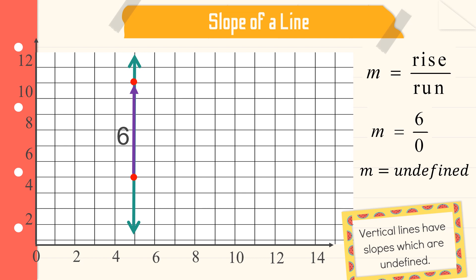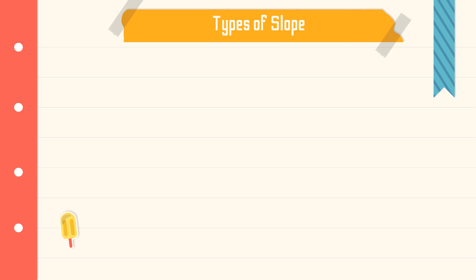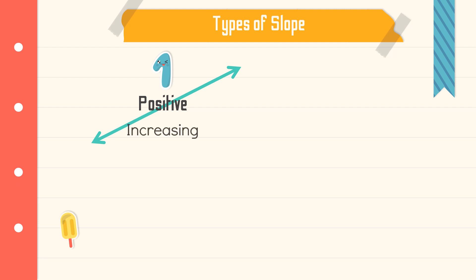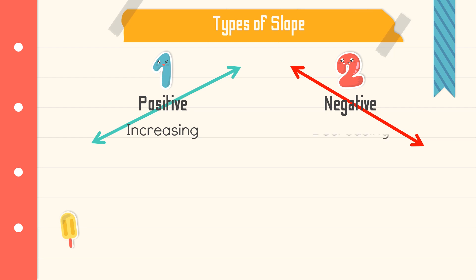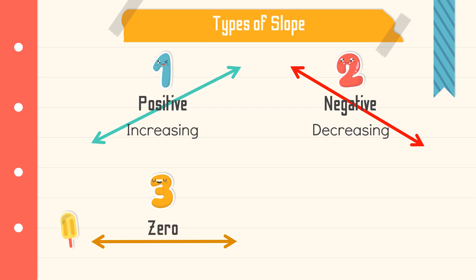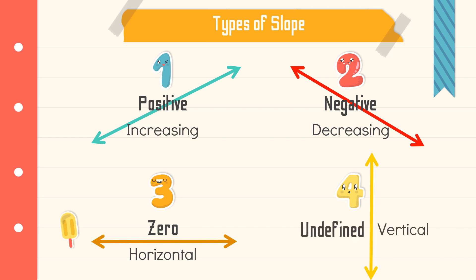So we were able to determine the slope given its graph, and at the same time we defined the four types of slope. For the first one, positive slope — the graph is increasing from left to right. For the second, negative slope — it is decreasing. For the third, a horizontal line has a slope of zero. And lastly, a vertical line has a slope which is undefined.